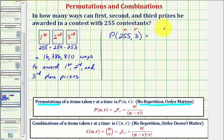So we have 255 factorial divided by 255 minus 3 factorial, which equals 255 factorial divided by 252 factorial.